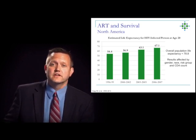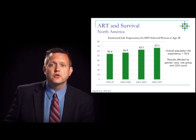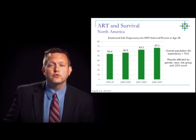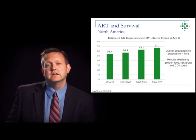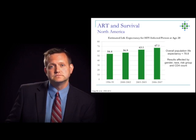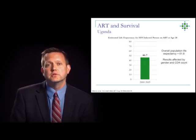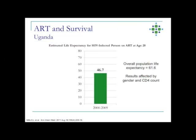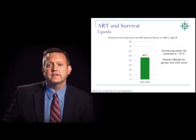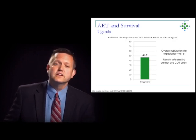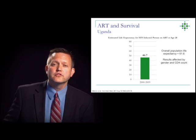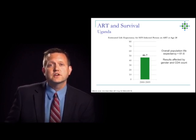Importantly, there are still strides to be made, as there are negative effects of gender, race, HIV risk group, and CD4 count at ART initiation — all indicating we still need to initiate people at higher CD4 counts to get optimal benefit. These same benefits are also seen globally. Data from Uganda show that a 20-year-old who initiates ART can expect a life expectancy of 46.7 years, compared to a population life expectancy of 61.6. Again, these results are affected by gender and importantly by CD4 count. So if we diagnose HIV early and initiate ART at high CD4 counts, we preserve immunologic function, decrease the damage done by HIV over time, and translate that to a significant survival advantage.